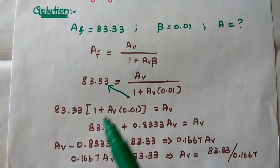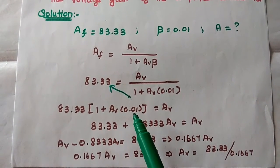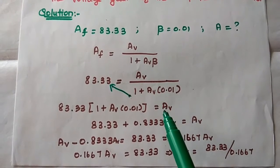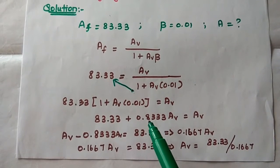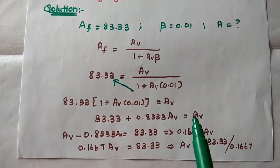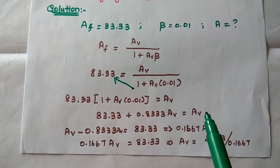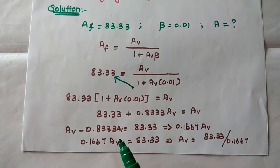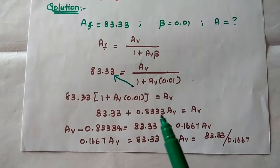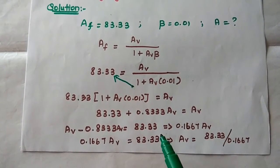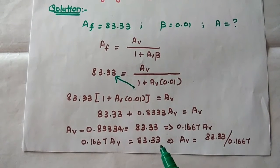Cross-multiplying: 83.33 × (1 + 0.01·A) = A. Expanding: 83.33 + 0.8333·A = A. Moving 0.8333·A to the right side: 83.33 = A − 0.8333·A = 0.1667·A.